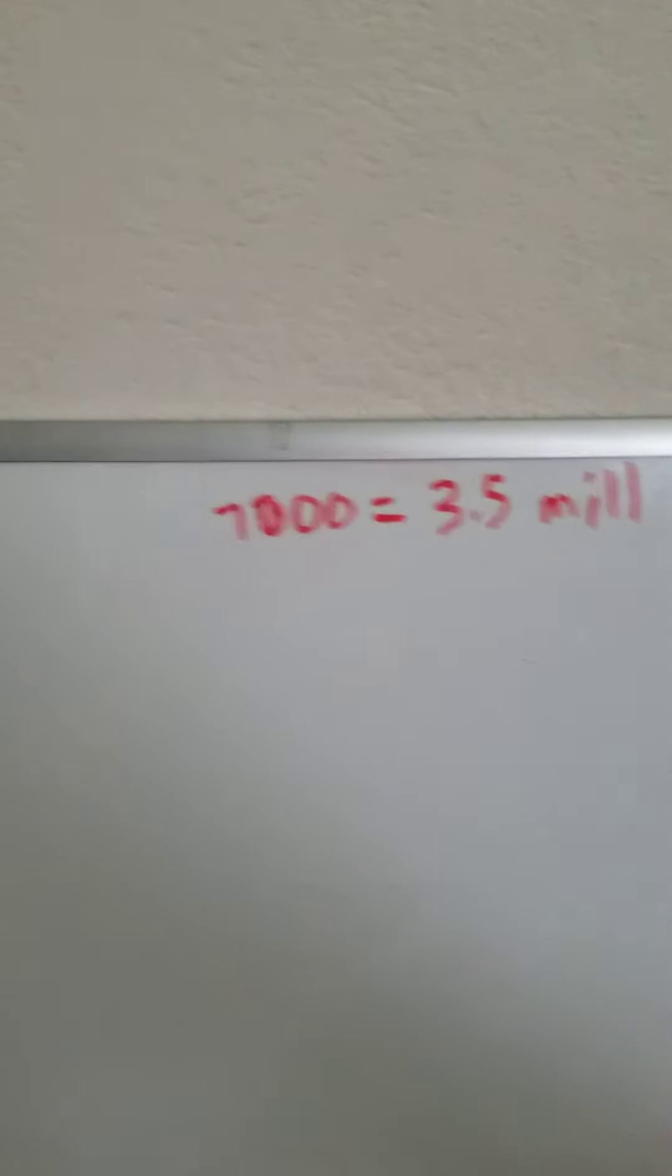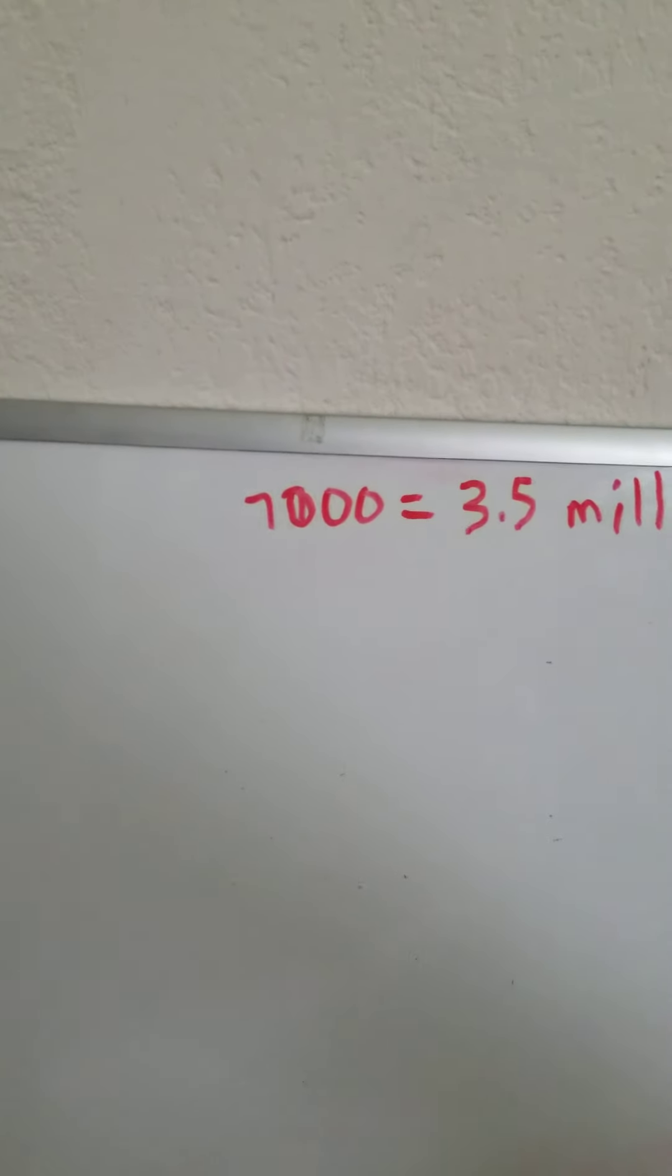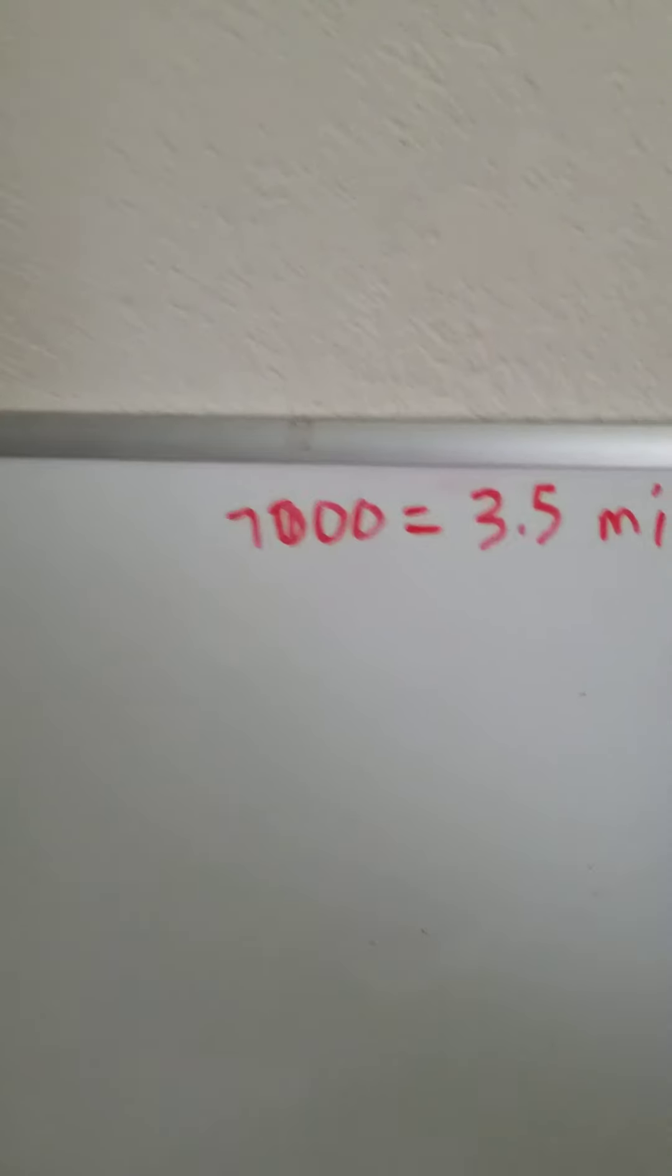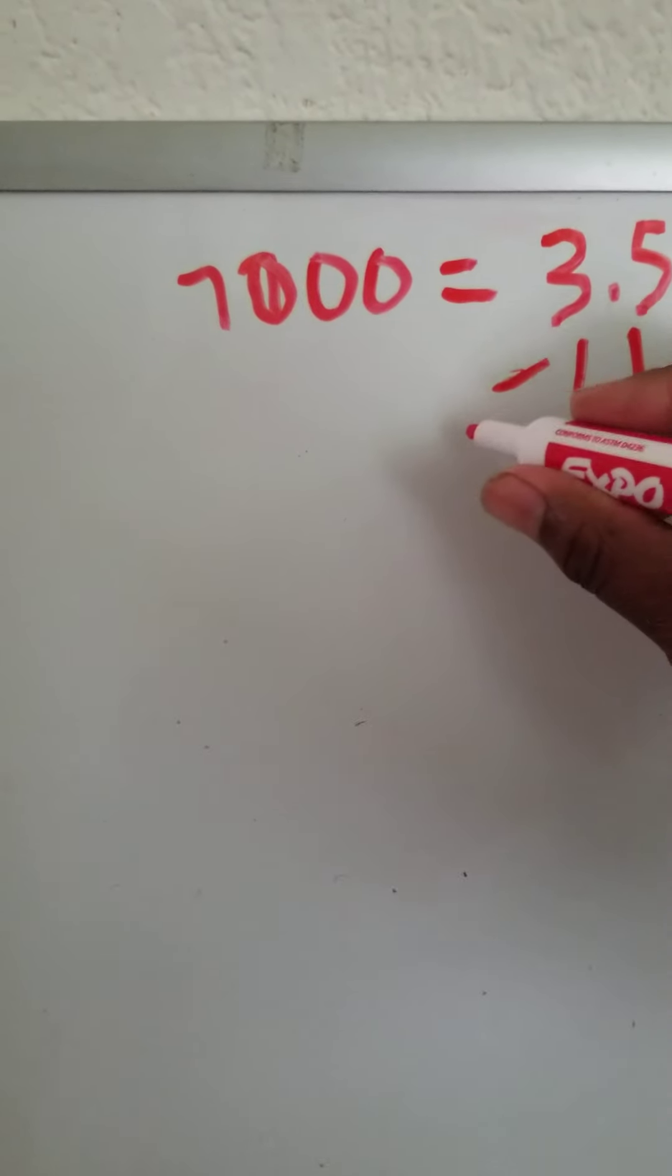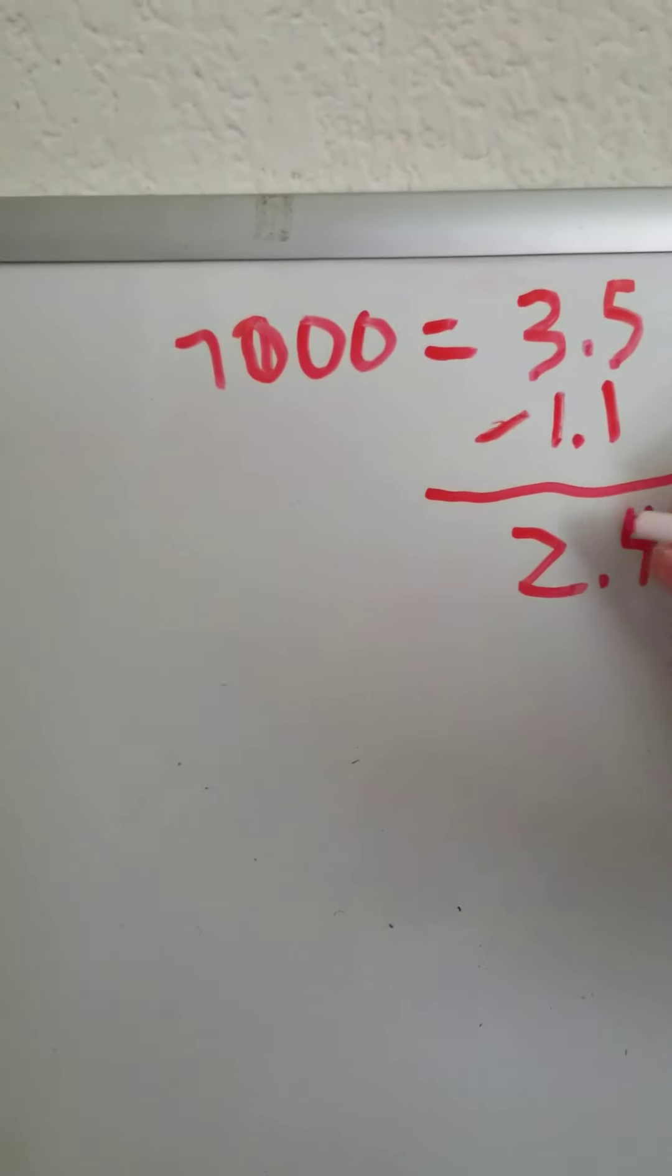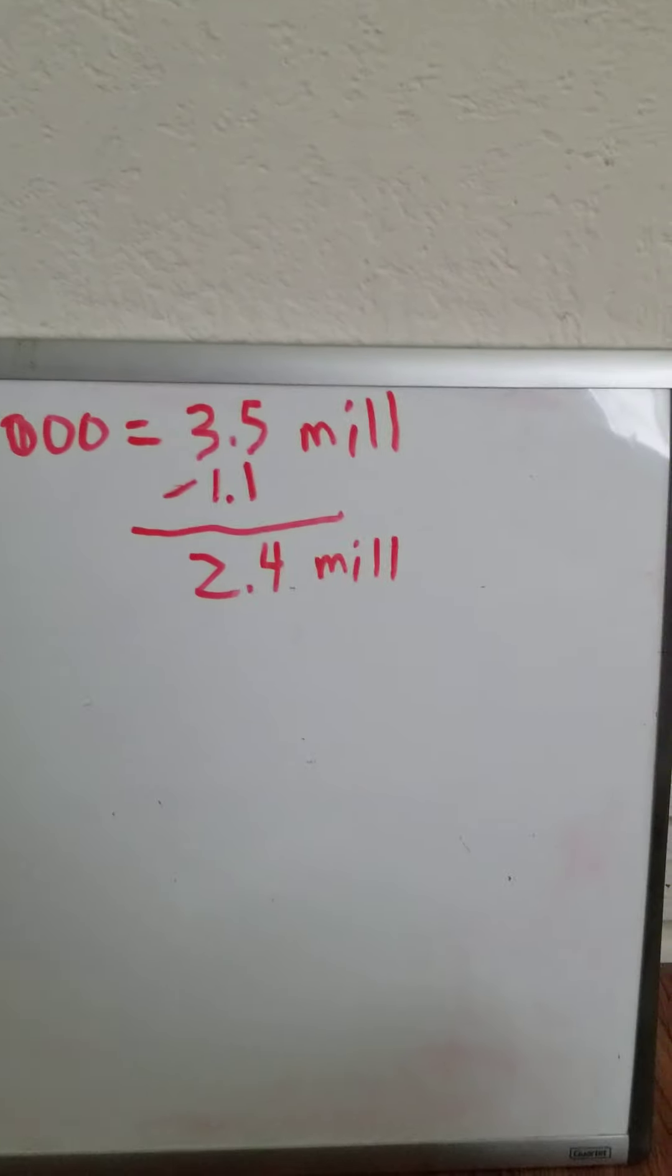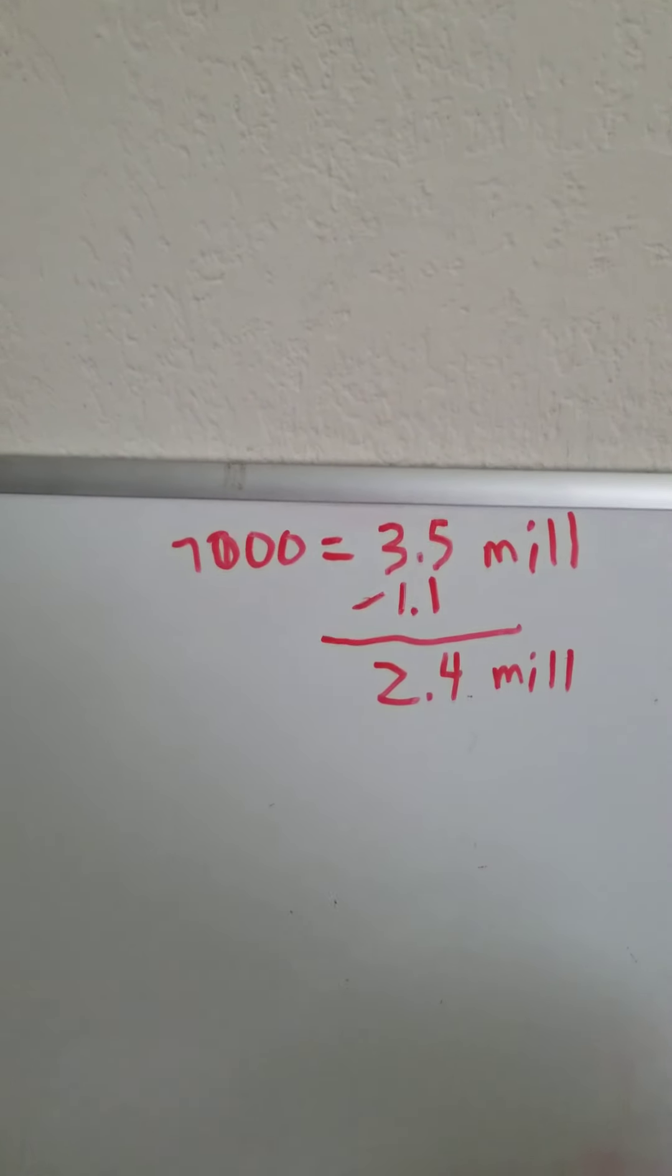We're gonna pretend like I inherited this from my grandfather. What would I do? I would take 1.1 million, so let's subtract 1.1 and that gives me 2.4 million left. Of course it would be actually less than that, but like I said I estimated to 3.5. So I'll have like 2.4 million.